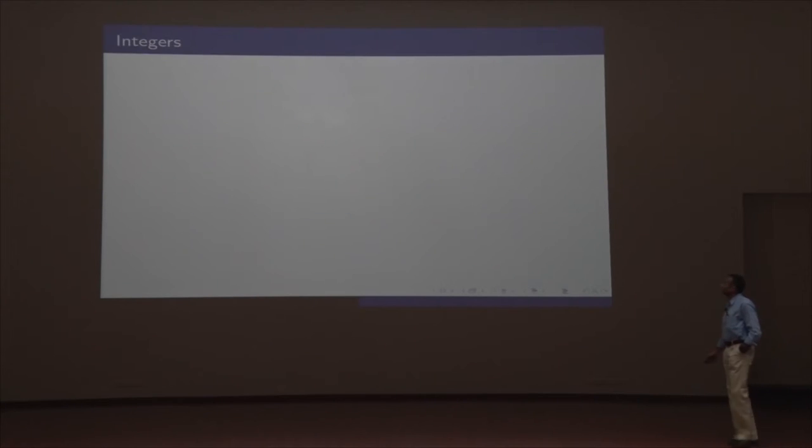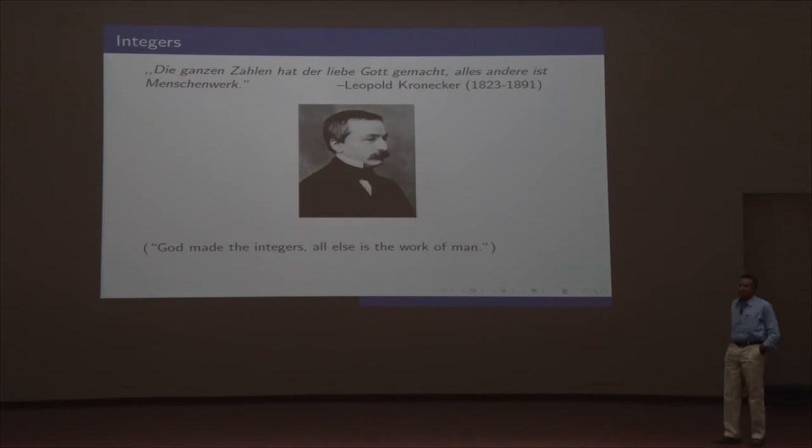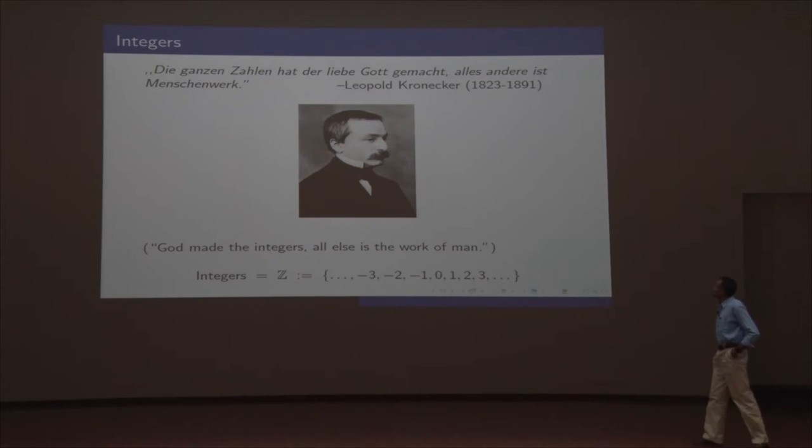So, well, numbers, another word, integers. I want to start with a favorite quote of mine. This is a quote attributed to the great German number theorist Kronecker. That's Kronecker for you. And if you're unfamiliar with German, it means God made the integers, all else is the work of man. But I guess it literally translates to the set of all integers was made by our dear God, everything else is man's work. Well, those are integers and traditionally in mathematics, you see the letter Z to denote the set of all integers. And that is because of the great German tradition and that word stands for numbers.